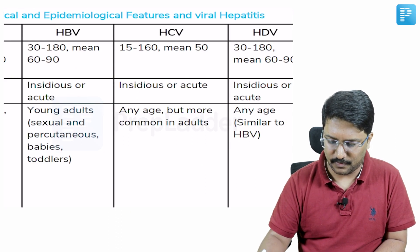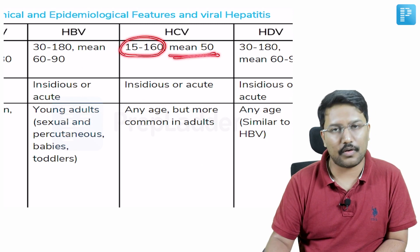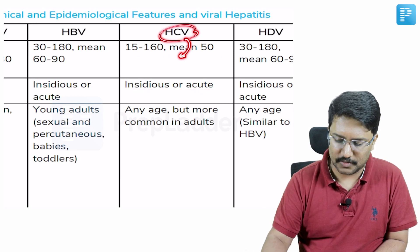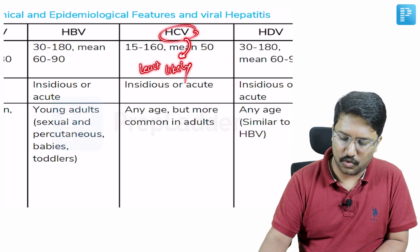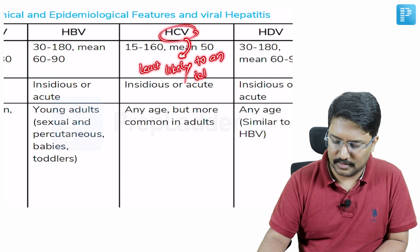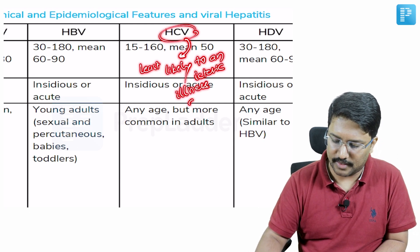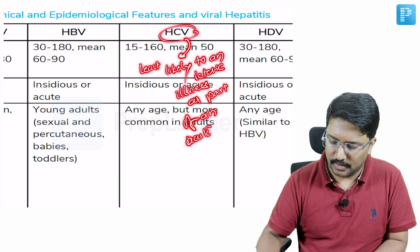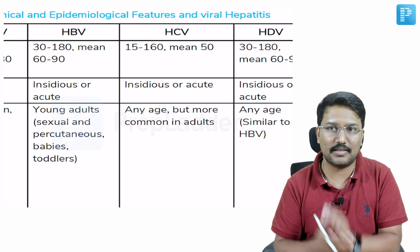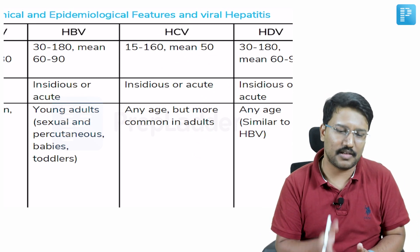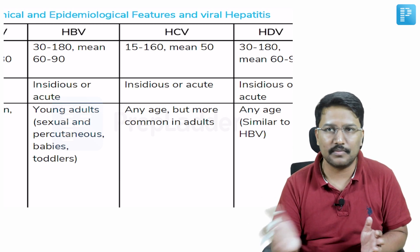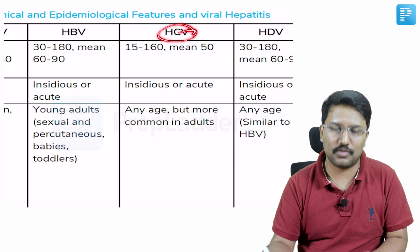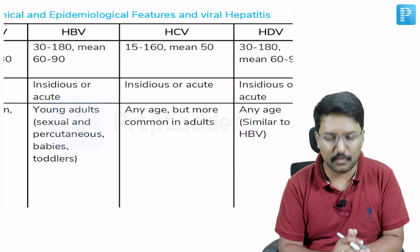Hepatitis C has an incubation period ranging from 15 to 160 days with a mean of around 50 days. Onset could be insidious or acute. Importantly, HCV among the acute infections is least likely to cause an icteric illness — meaning that in most patients with chronic HCV, you cannot pinpoint a preceding acute icteric illness because it simply does not occur.